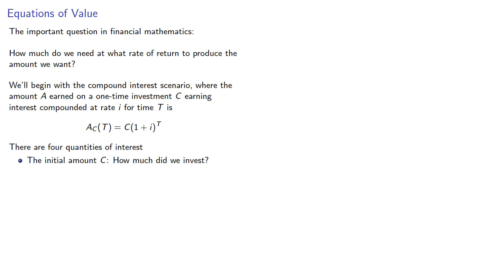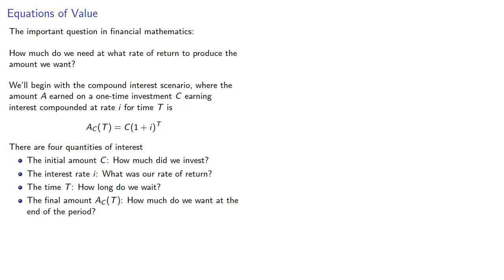how much did we invest? The interest rate I, what was our rate of return? The time T, how long do we wait? And the final amount A, C, T, how much do we want at the end of the period? And because this is an equation, if you know any three, you can find the fourth.